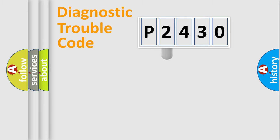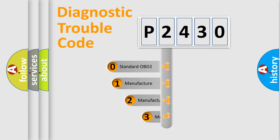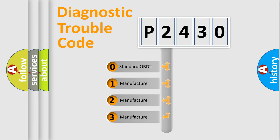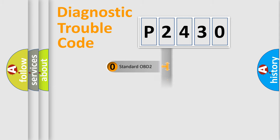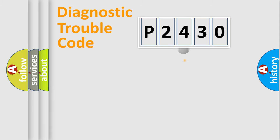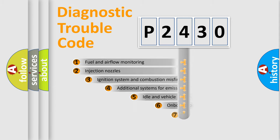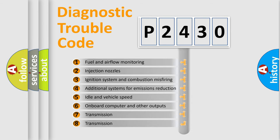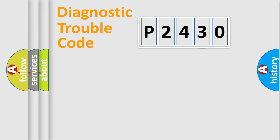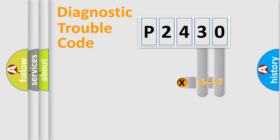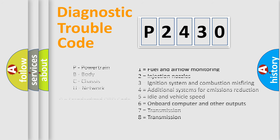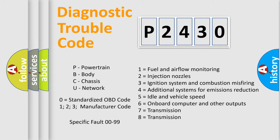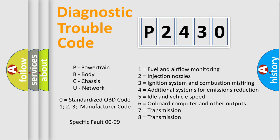This distribution is defined in the first character of the code. If the second character is expressed as zero, it is a standardized error. In the case of numbers 1, 2, or 3, it is a more manufacturer-specific expression of a car-specific error. The third character specifies a subset of errors, and only the last two characters define the specific fault of the group. This division is valid only if the second character code is expressed by the number zero.